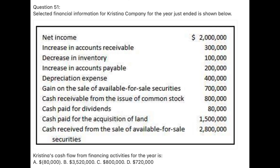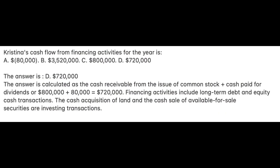Question 51. Selected financial information for Christina Company for the year just ended is shown below. Christina's cash flow from financing activities for the year is: A. $80,000; B. $3,520,000; C. $800,000; D. $720,000. The answer is D: $720,000. The answer is calculated as the cash receivable from the issue of common stock plus cash paid for dividends: $800,000 minus $80,000 equals $720,000. Financing activities include long-term debt and equity cash transactions. The cash acquisition of land and the cash sale of available-for-sale securities are investing transactions.